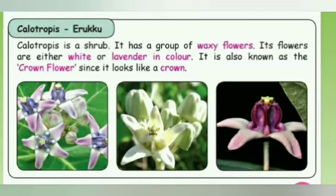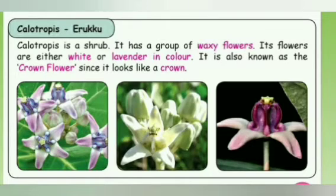We also call this flower as irkampu. The calotropis is a shrub that has a group of waxy flowers. The flowers of this plant will be either white or lavender in color. Since the flower looks like a crown, it is also known as the crown flower.